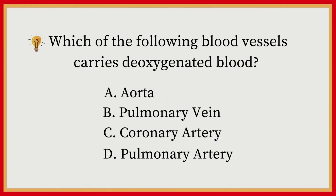Which of the following blood vessels carries deoxygenated blood? A) Aorta, B) Pulmonary vein, C) Coronary artery, D) Pulmonary artery. Answer: D, Pulmonary artery.